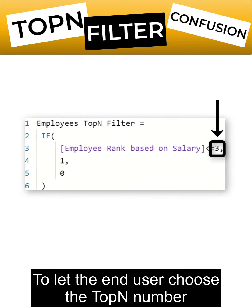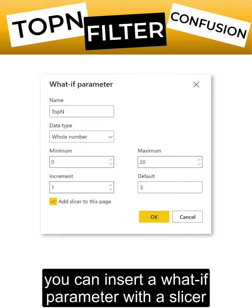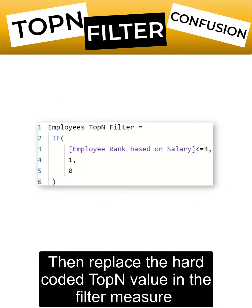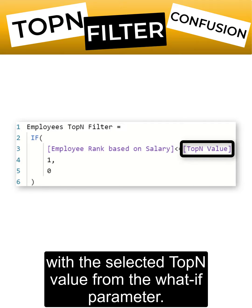To let the end user choose the top-end number, you can insert a what-if parameter with a slicer. Then, replace the hard-coded top-end value in the filter measure with the selected top-end value from the what-if parameter.